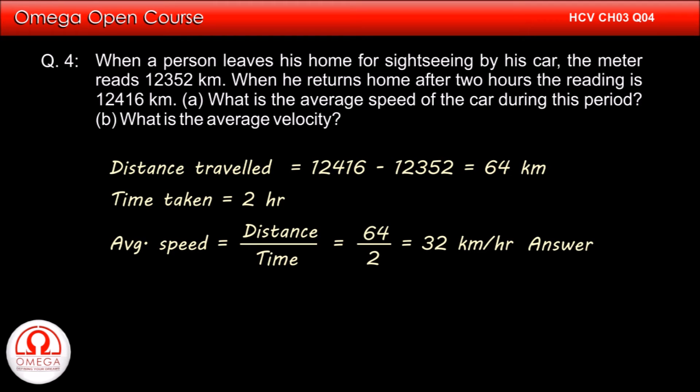Since the person finally returns to his home, i.e. the point from where he started, his net displacement is zero and hence his average velocity is zero. This is the answer to part B of the question.